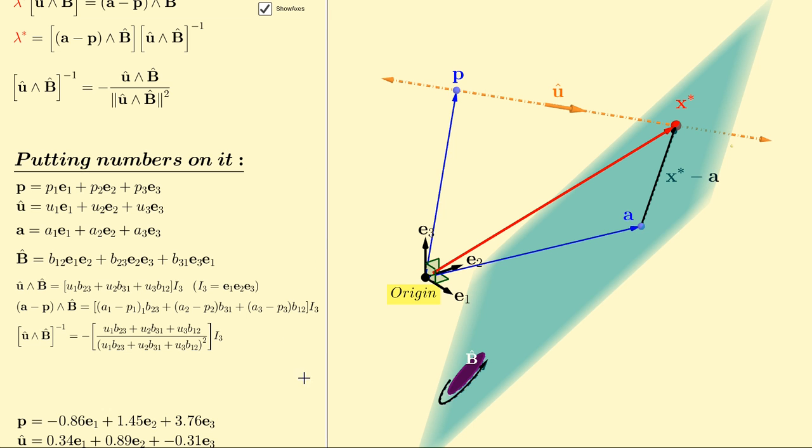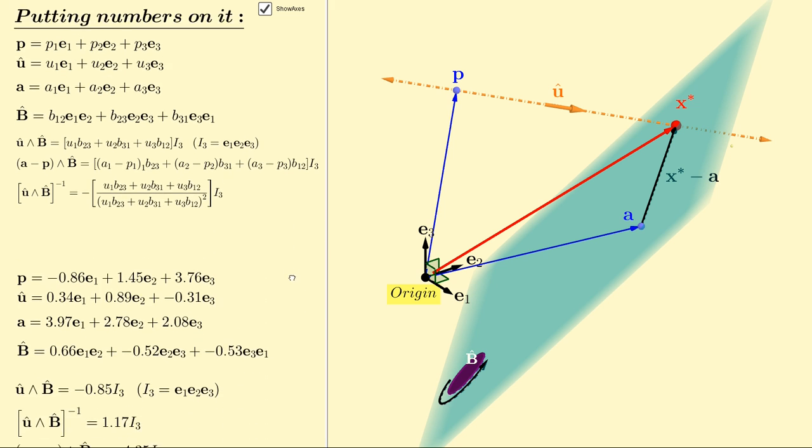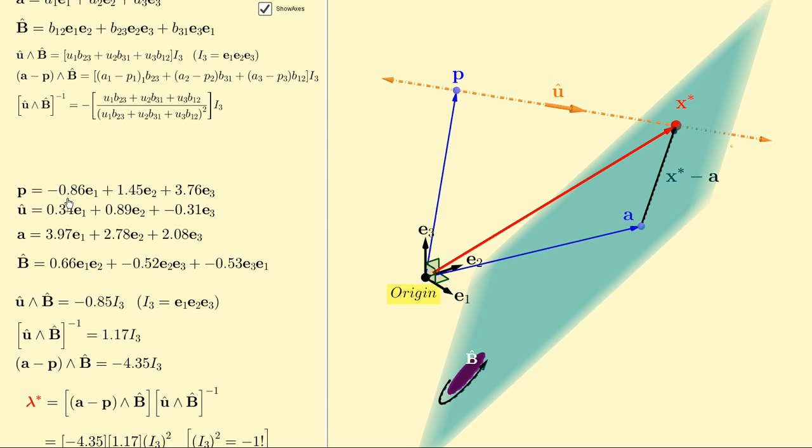Let's look at specific numbers here according to this reference frame. Here we have our three vectors, p, u hat, and a, expressed according to this specific reference frame, and also b hat.